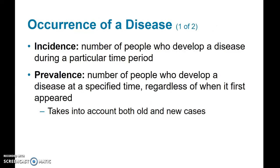We can also look at the occurrence of a disease. Incidence is the number of people who develop a disease during a specific time period. Prevalence is the number of people who have a disease at a specified time, taking into account both old and new cases, whereas incidence is looking at only new cases during a particular time period.